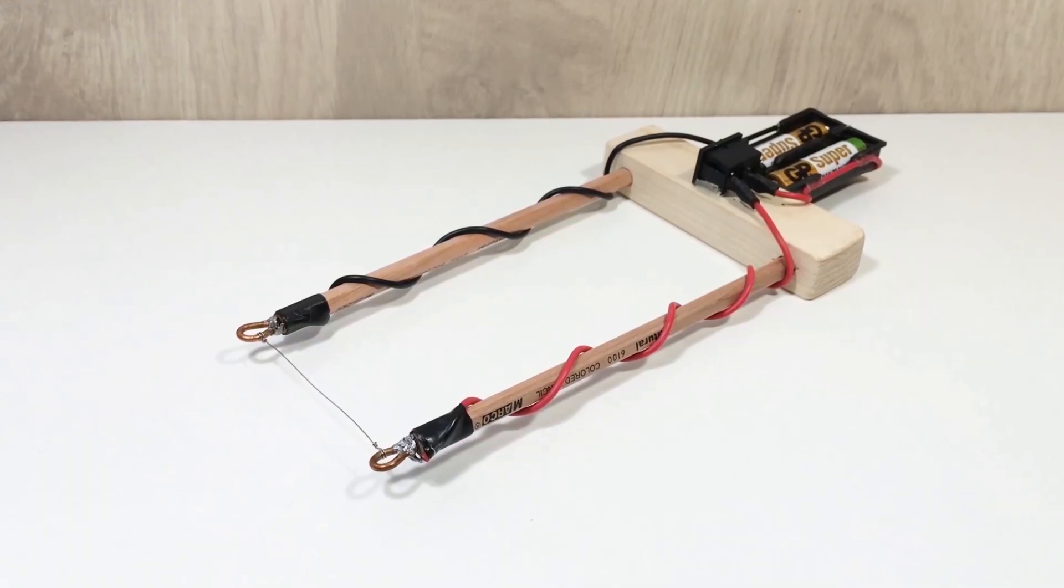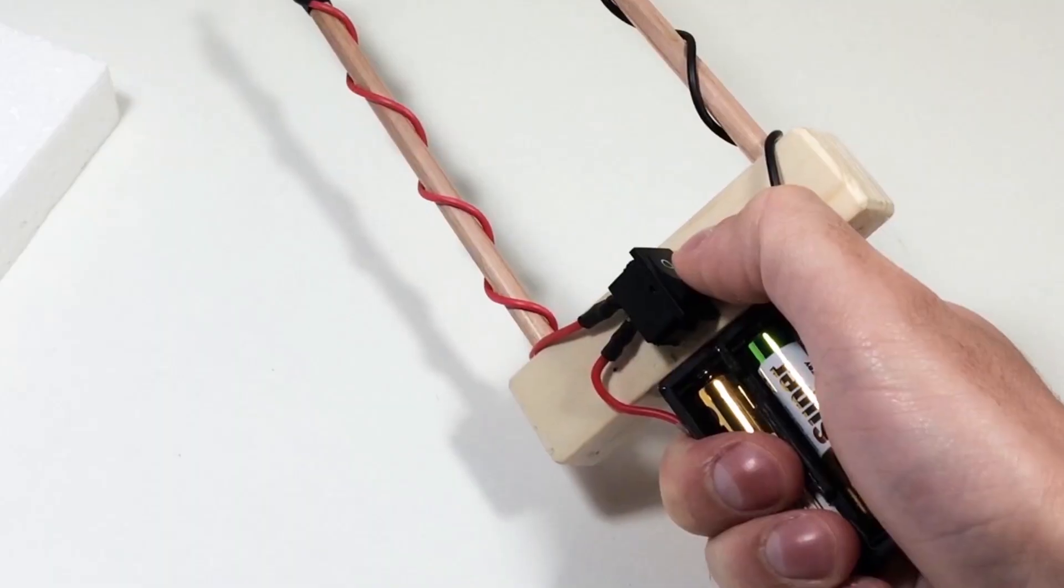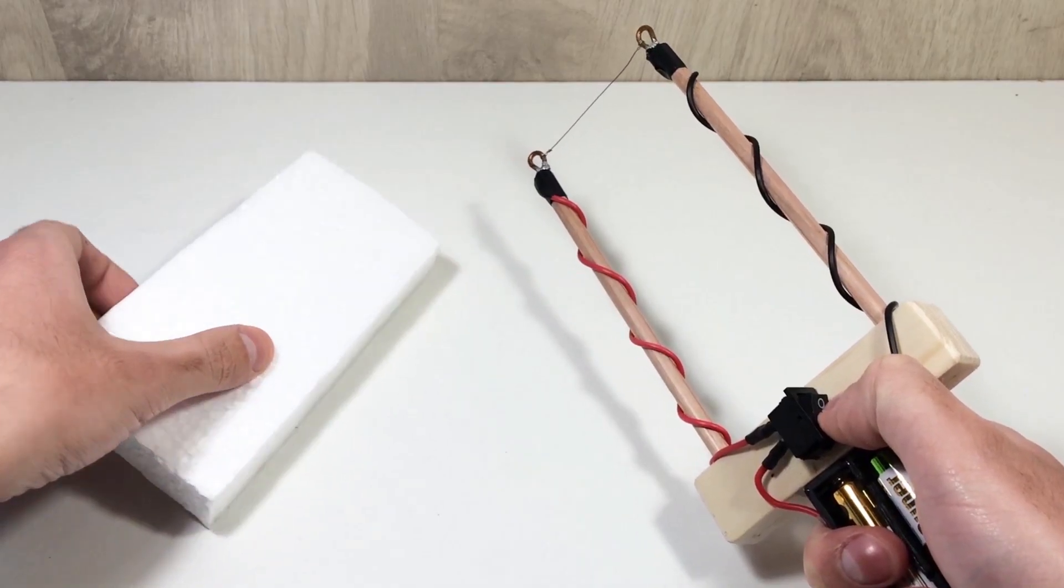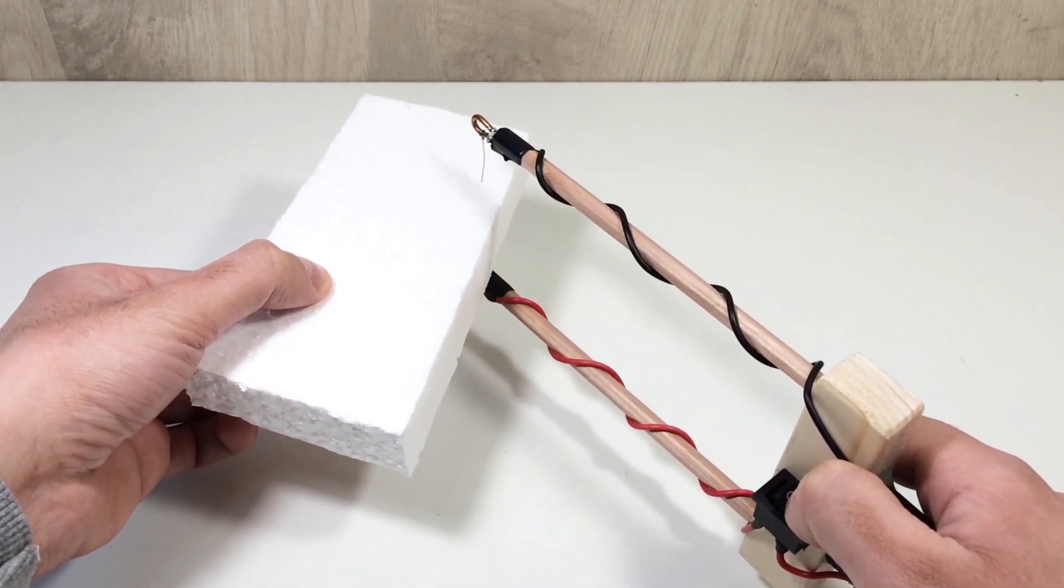And that's it! Your homemade mini foam cutter is ready to go! Flip the switch and after just a few seconds the nichrome wire will start to heat up. Now gently bring a piece of foam close to the wire and boom, it melts through like butter!